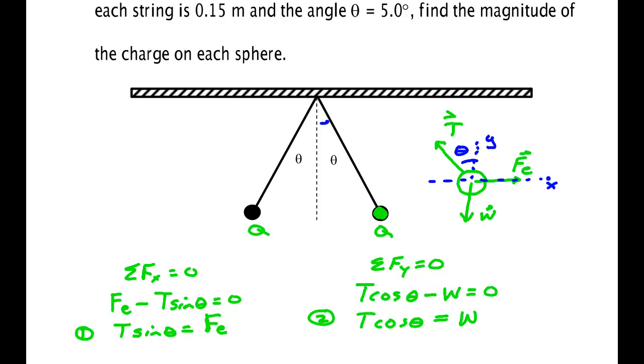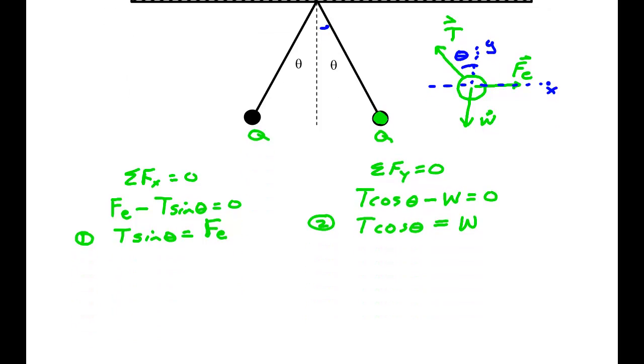To eliminate T, I simply divide equation one by equation two. So divide one by two to eliminate the unknown tension. When you have transcendental equations as trig functions, do not try substitutions. It tends to make the problem worse. Isolate the trig function. I divide. I eliminate the T. I get sine theta over cosine theta. And I get FE over W.